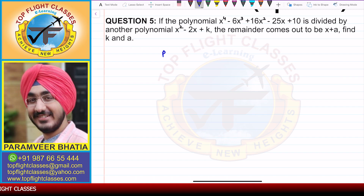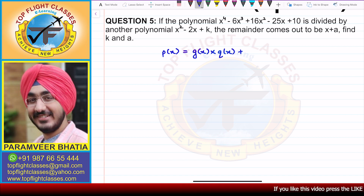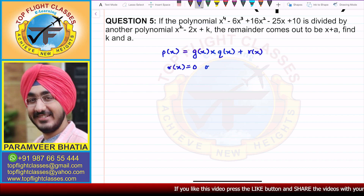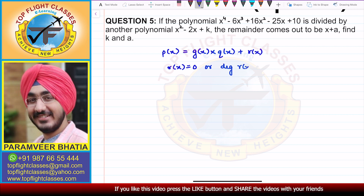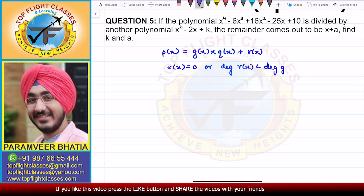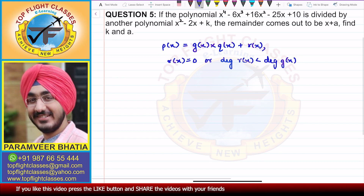In this we'll use the division algorithm. Division algorithm is: p(x) = g(x) multiplied by q(x) plus r(x), where r(x) is either equal to 0 or the degree of r(x) is less than the degree of g(x). We need to use this in this case.